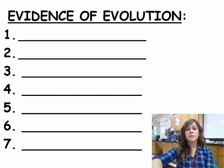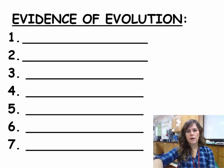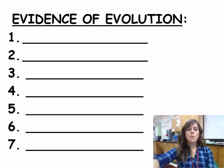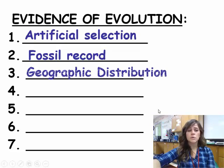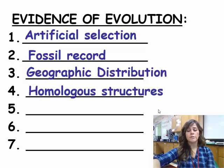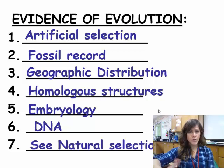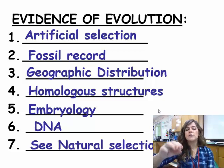Today we're going to go over Chapter 16.4 - Evidence of Evolution. We have seven big pieces of evidence that we can use to back up Darwin's theory: artificial selection, the fossil record, geographic distribution, homologous structures, embryology, DNA, and we actually see it happen. We're going to go through each one of these, so if you don't have this somewhere in your notes, let's make sure that you add it.